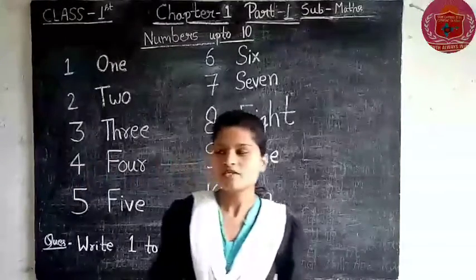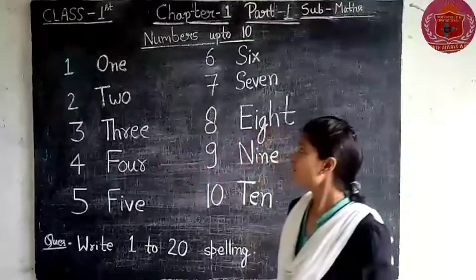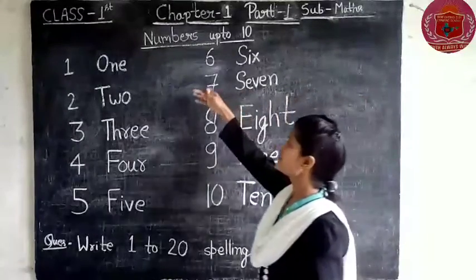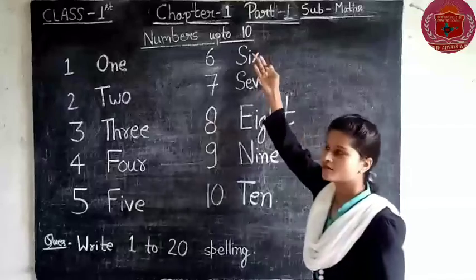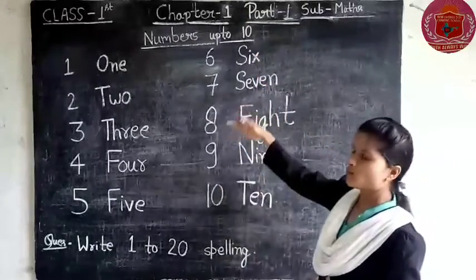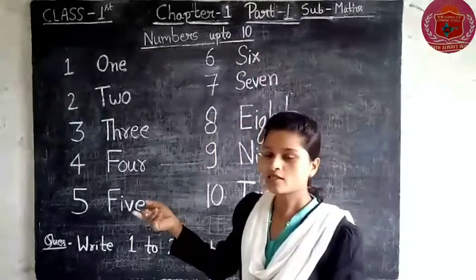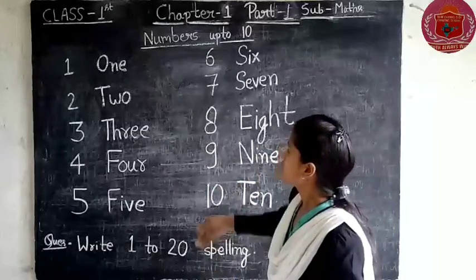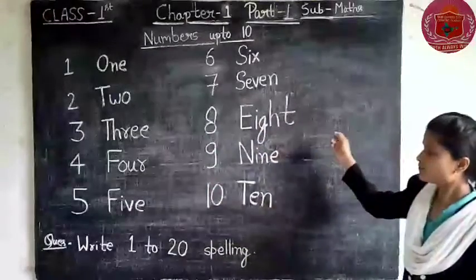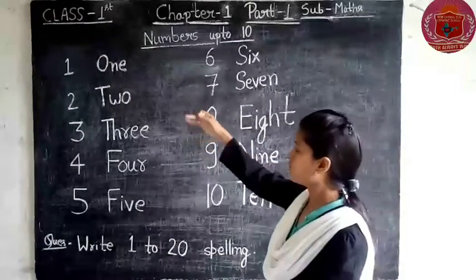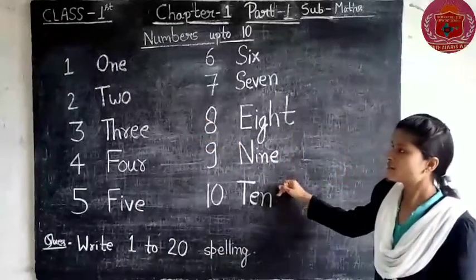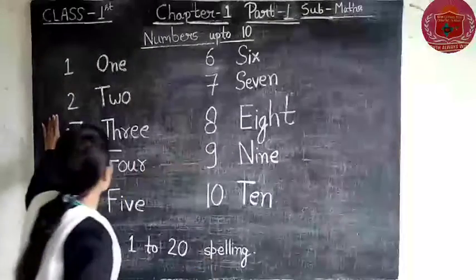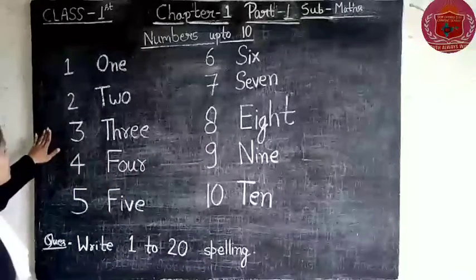Hello friends, today I am going to teach you math chapter one, and chapter one is numbers 1 to 10. Here are some digits from 1 to 10 and the spellings of 1 to 10, so we will discuss one by one.